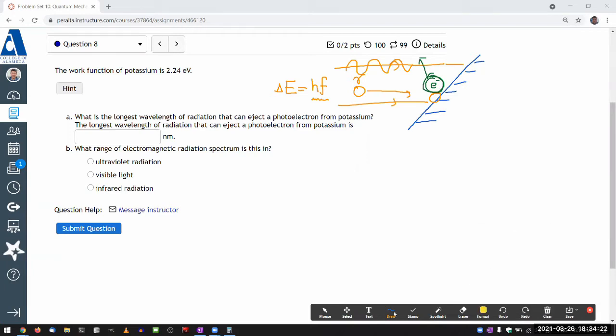And in that context, the phrase work function refers to the binding energy of the electrons that are least tightly bound to the surface, I guess, with the bulk material.